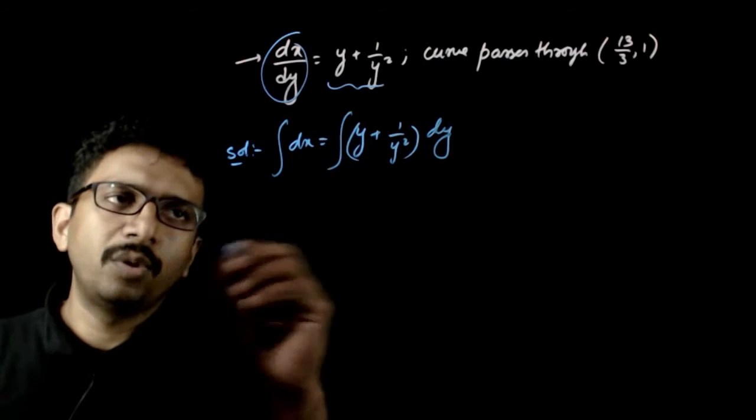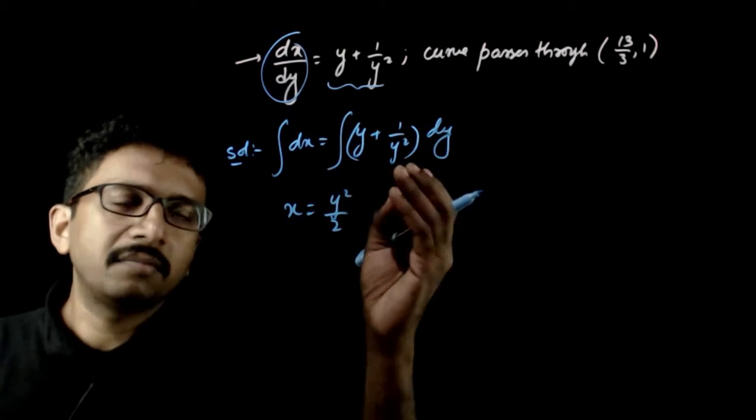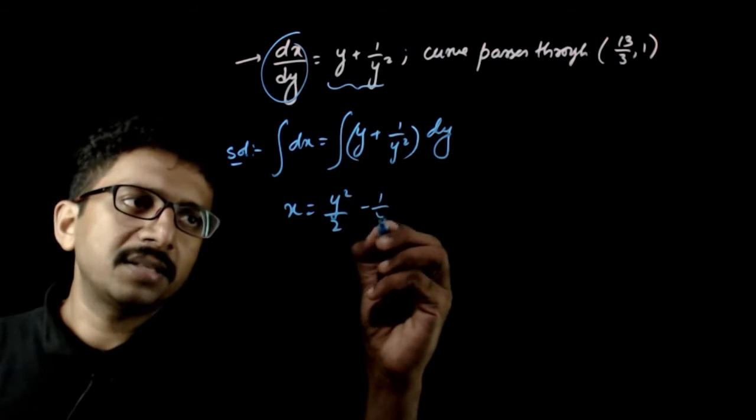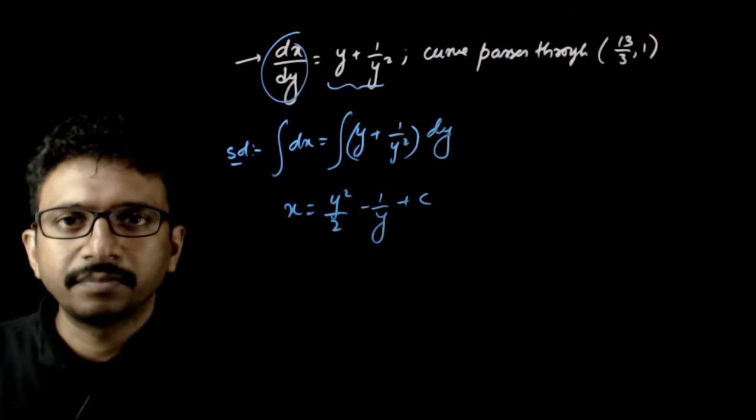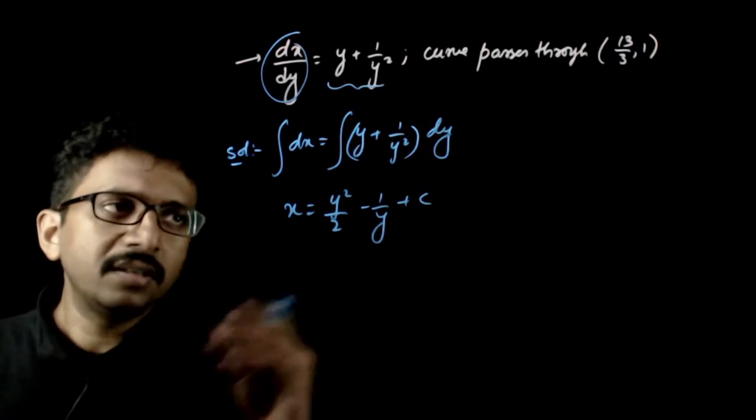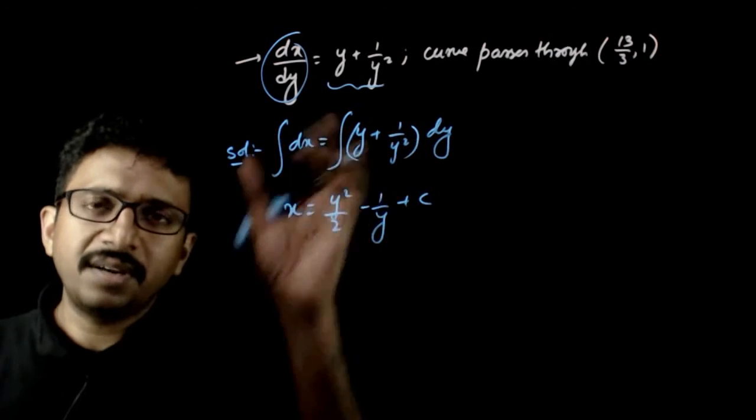And if you integrate this on both sides, x is equal to y square by 2 and 1 by y square minus 1 by y plus c. So this is the curve, this is a general solution of this differential equation.